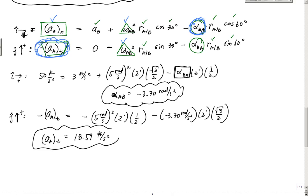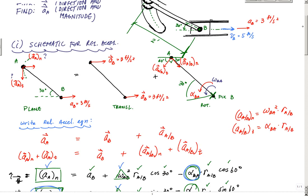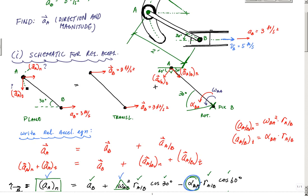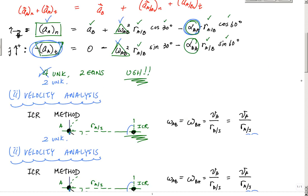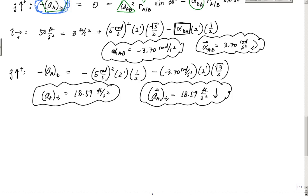So here, this numerical value is positive, which means when I go back all the way up to this drawing right here, I found AAT to be positive. That means this direction is correct. And then I found alpha BA to be negative, which means that alpha BA should actually be going the other way. So I had assumed it to be counterclockwise, and really, it's going clockwise. So when I write this out in vector form, this is actually alpha AB is 3.70 radians per second squared in this direction, clockwise. That's what that means here. And then here, AAT, the vector, is equal to 18.59 feet per second squared downwards. So direction and magnitude provided in the result here.